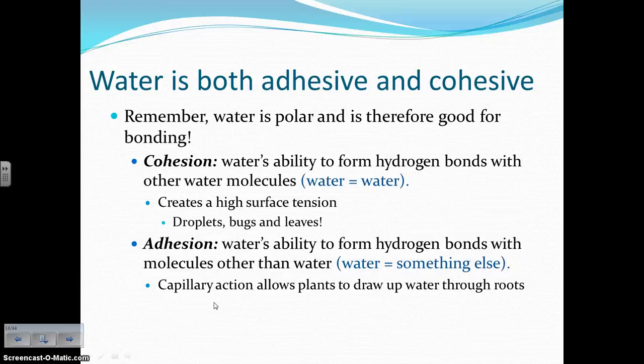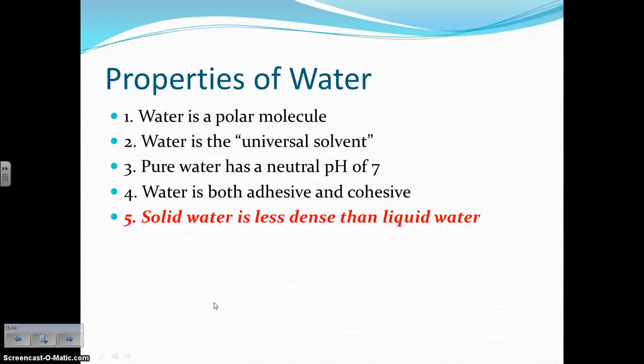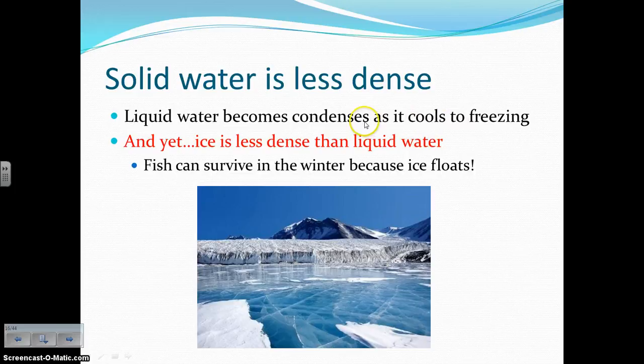The last property is the fact that solid water is less dense than liquid water. As liquid water cools to freezing, it does condense, but ultimately frozen water — ice — is less dense than liquid water. This is why ice floats, and that is very beneficial to living things. Think about fish during wintertime: organisms living in lakes and ponds and rivers that are freezing can still live and thrive because the ice is floating on top.